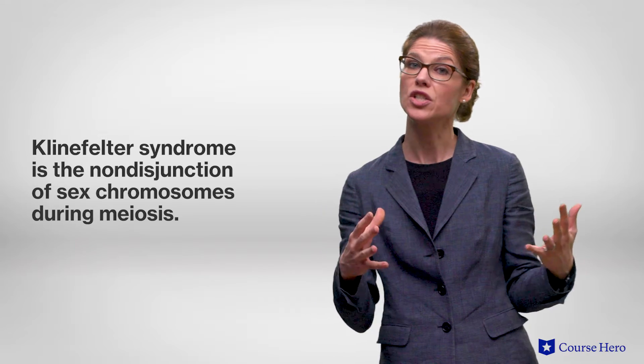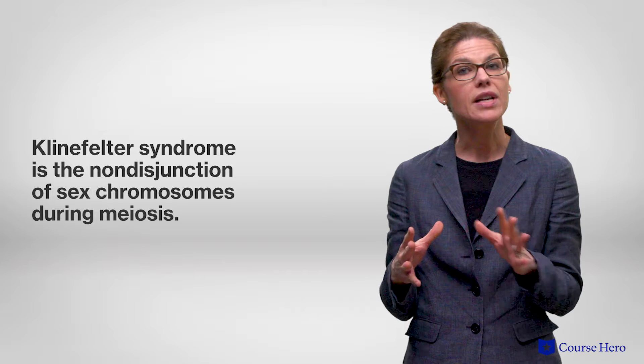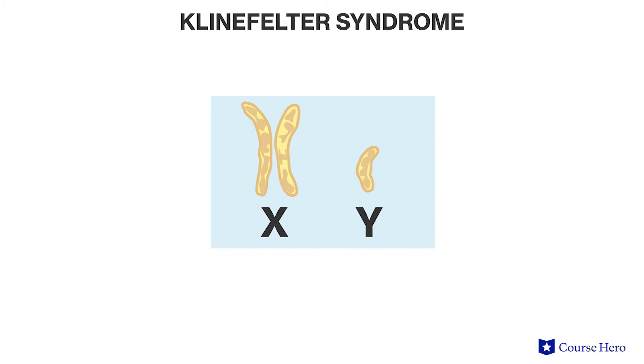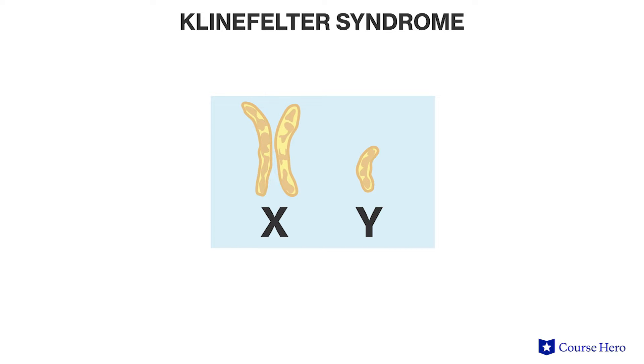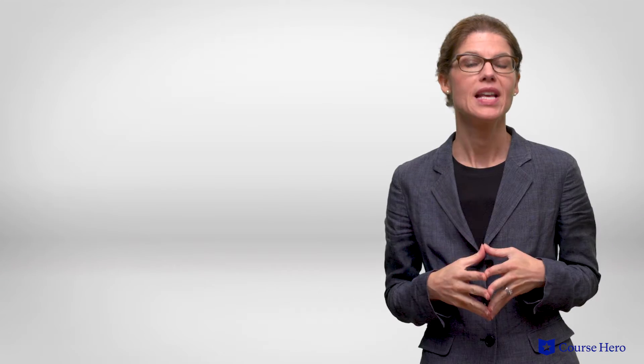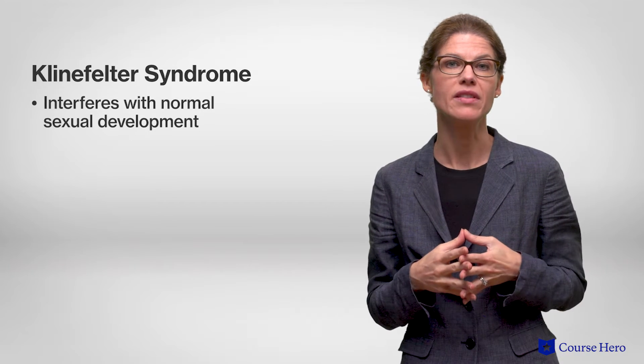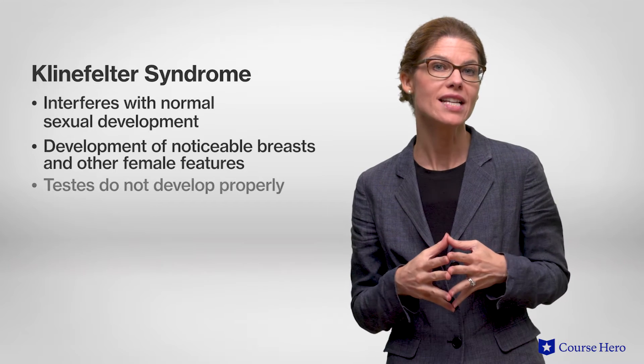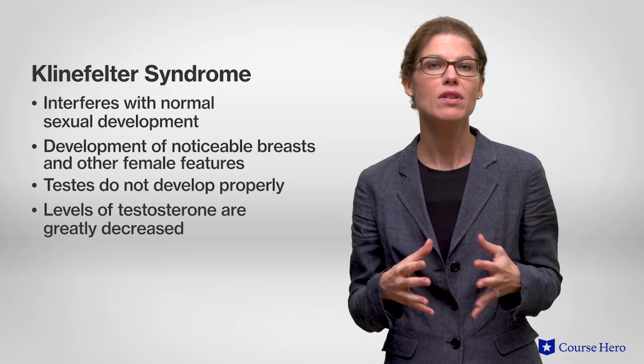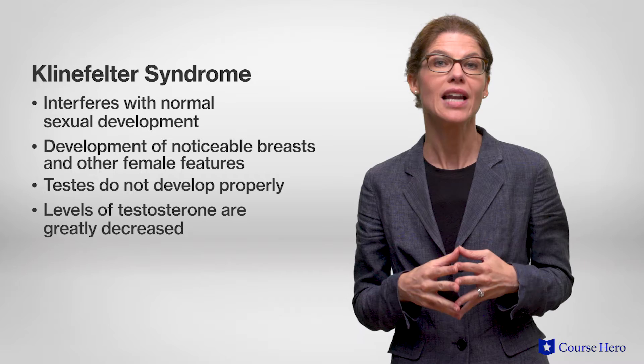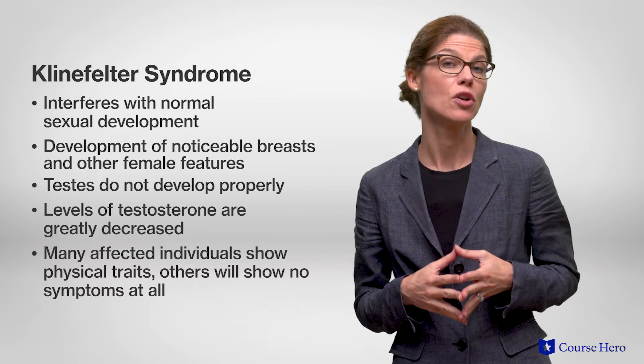The last example of a condition arising from an abnormal number of chromosomes is Klinefelter syndrome. Klinefelter is similar to Turner syndrome in that it involves nondisjunction of sex chromosomes during meiosis. However, in this case, it impacts males who end up with two X chromosomes and one Y chromosome. This aneuploid condition, like Down syndrome, is classified as a trisomy. Having two X chromosomes interferes with normal sexual development in the male and results in other female features. The testes in affected individuals do not develop properly and testosterone levels are greatly decreased. There is a lot of variation in how Klinefelter affects males — while many show physical traits, others show no symptoms at all. In fact, these men may not even realize they have the disorder unless they visit a fertility specialist, as most affected individuals are infertile.